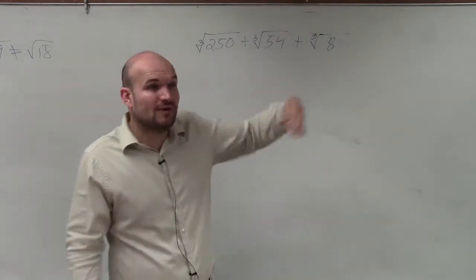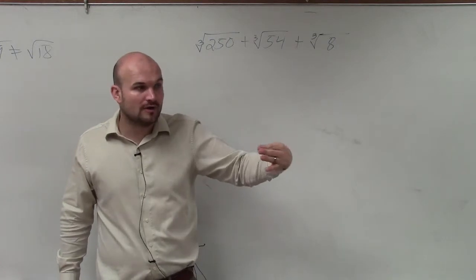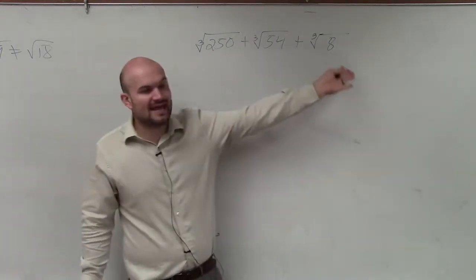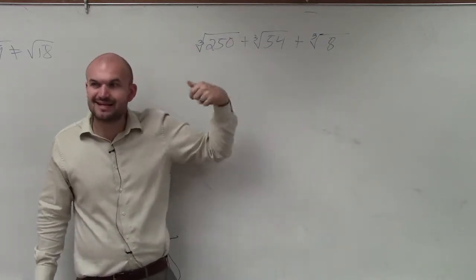When we're taking a cube root, we want to write down numbers that are cubed. So the most important thing is for you guys to know the cubed numbers. Yes, you can use prime factorization. Yes, you can break down 8 into 2 times 2 times 2. But do you guys want to keep on doing that for all these problems? It kind of gets old.